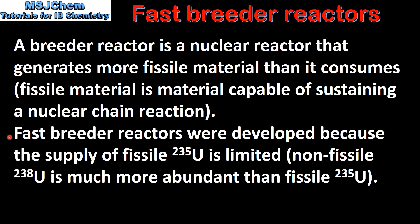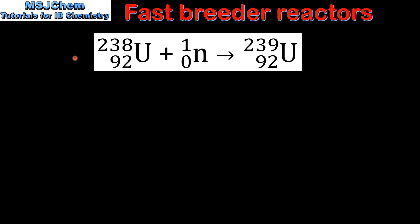Fast breeder reactors were developed because the supply of fissile uranium-235 is limited. Non-fissile uranium-238 is much more abundant than fissile uranium-235. Next we'll have a look at the nuclear reactions that occur in a fast breeder reactor.